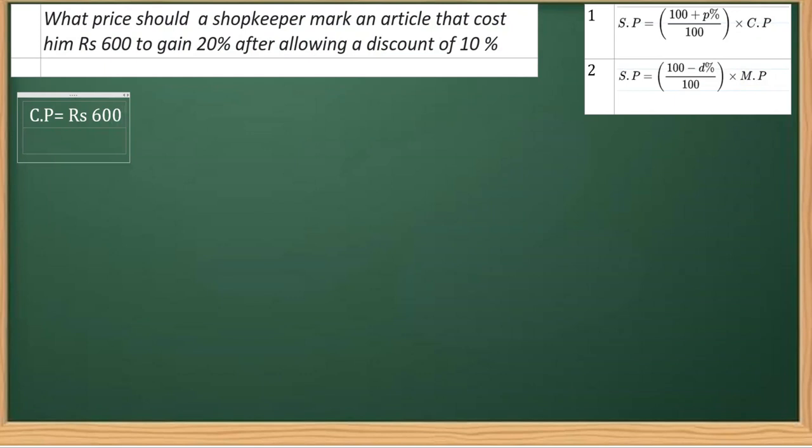This is the CP, and then we also know the gain percent, so we can write P is equal to 20 percent. This is the profit percent given. Next, the information given is discount, so D is equal to 10 percent. And we have to find the mark price, so we'll write MP is equal to question mark. This is what we have to get.